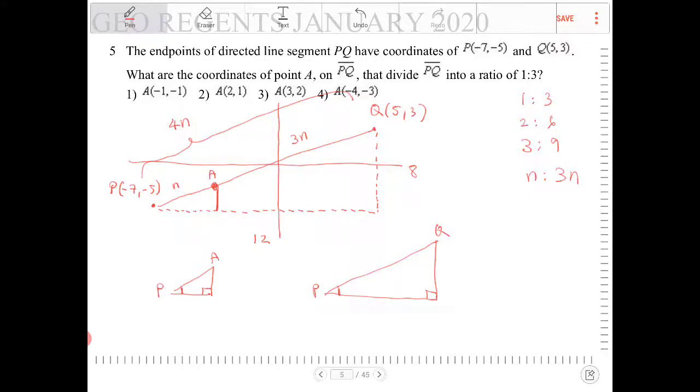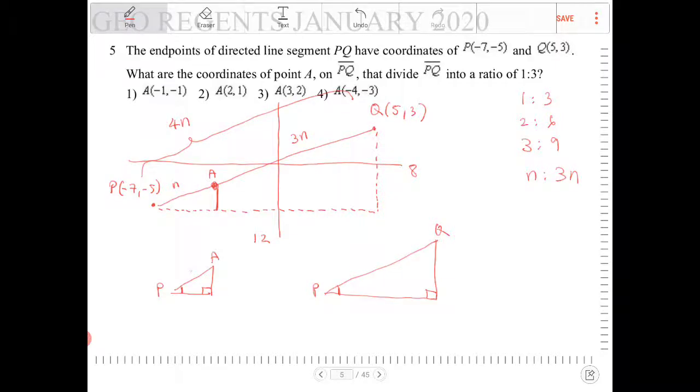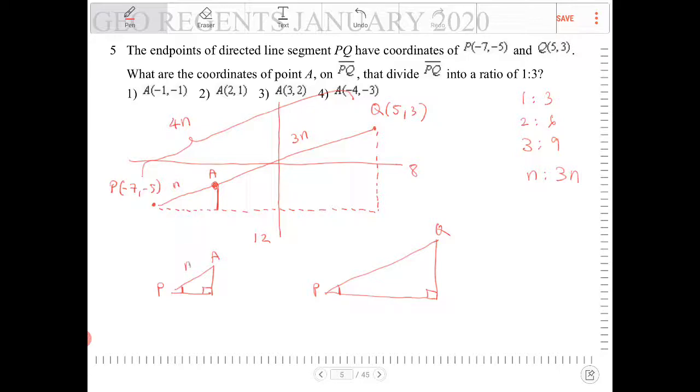So I don't know what the lengths are, but I do know that PA, if that has a side length of n, PQ must have a side length of 4n.